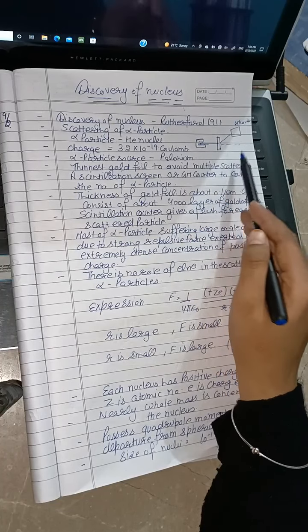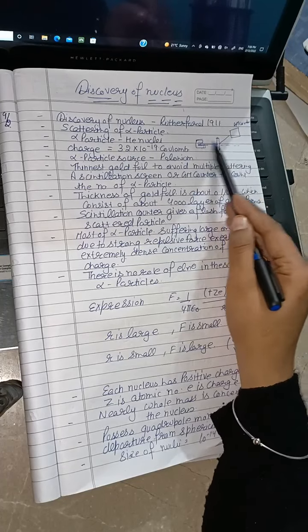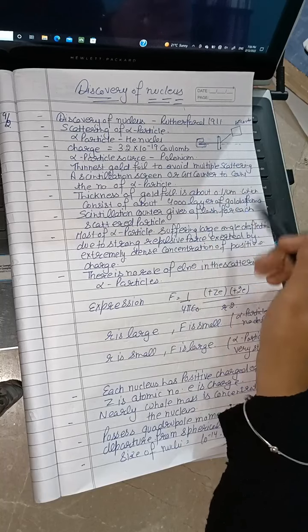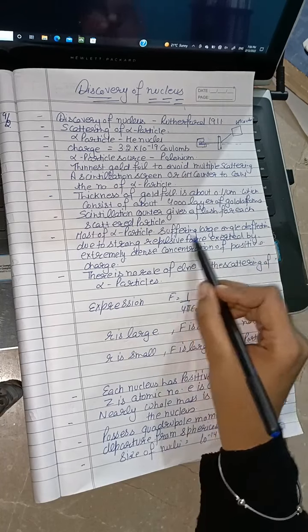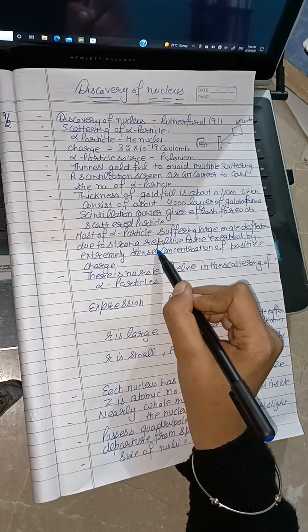Some alpha particles showed deflection at various angles. Those that went straight led to the conclusion that the atom was mostly empty space. The deflection indicated a strong repulsive force.